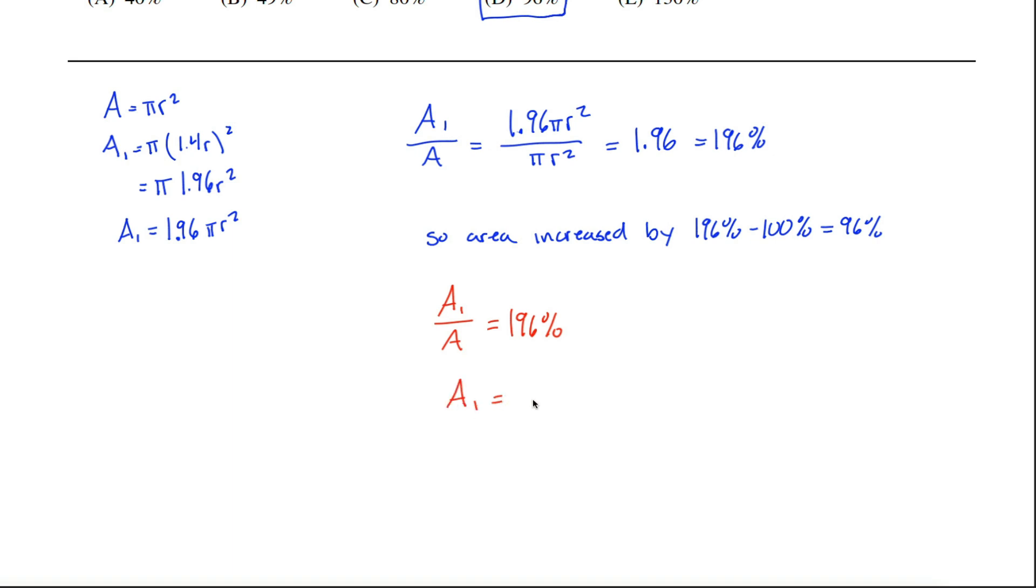which tells you A1 equals 196% A. And then if you do the little translation where the equal sign is the word is and multiplication is the word of, we can translate this mathematical statement into an English statement. We got the new area because remember that's what A1 represents. And then the equal sign translates to is 196%. And the multiplication sign translates to of. And then A was the original area. The new area is 196% of the original area.